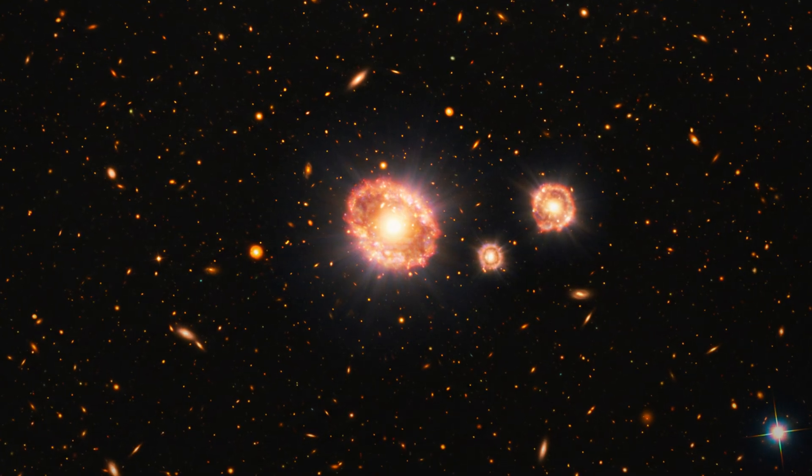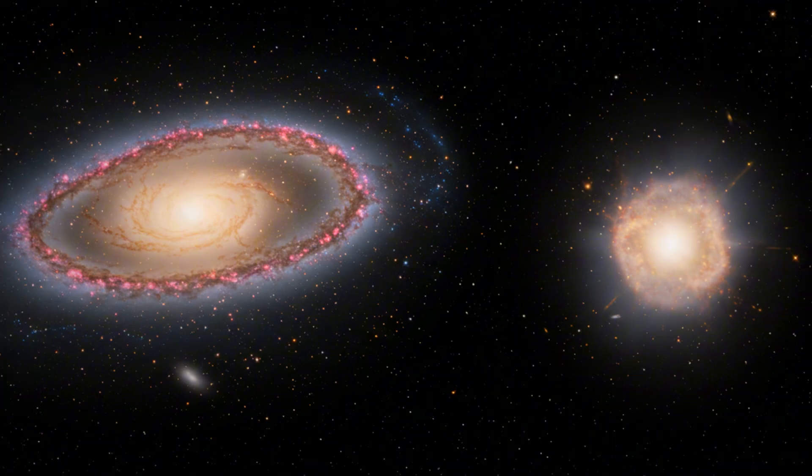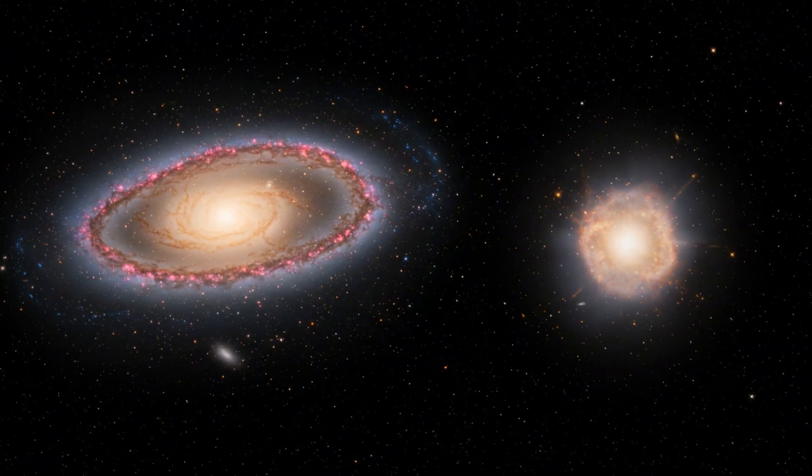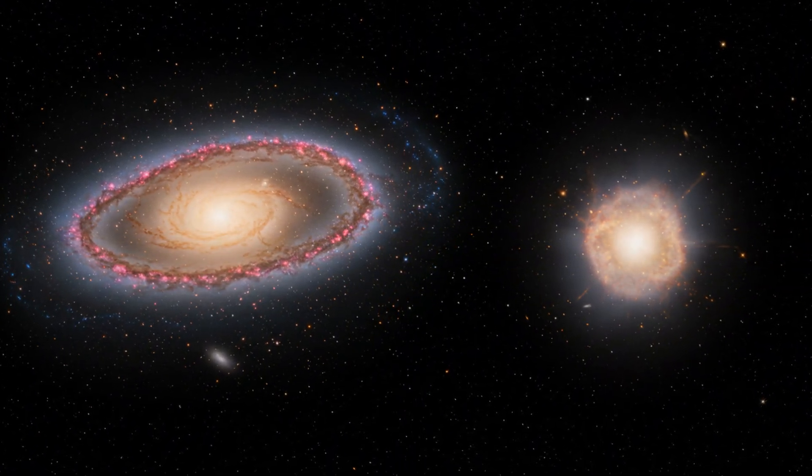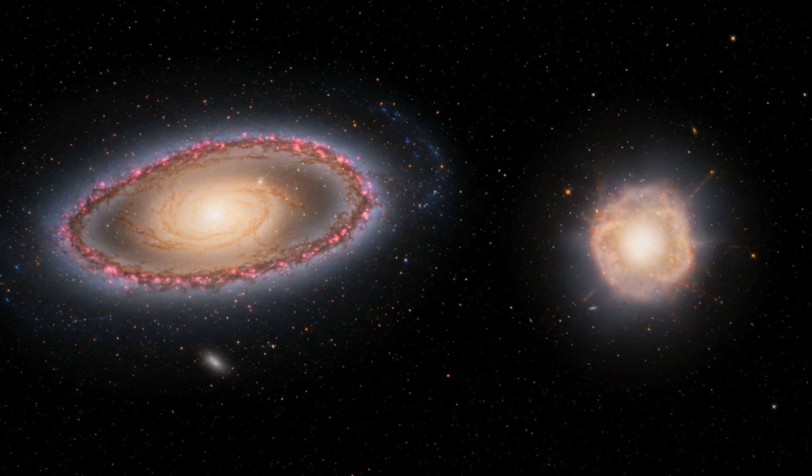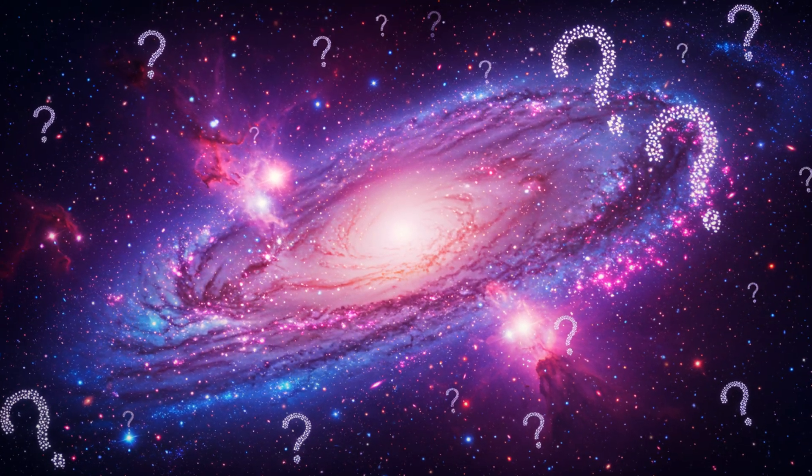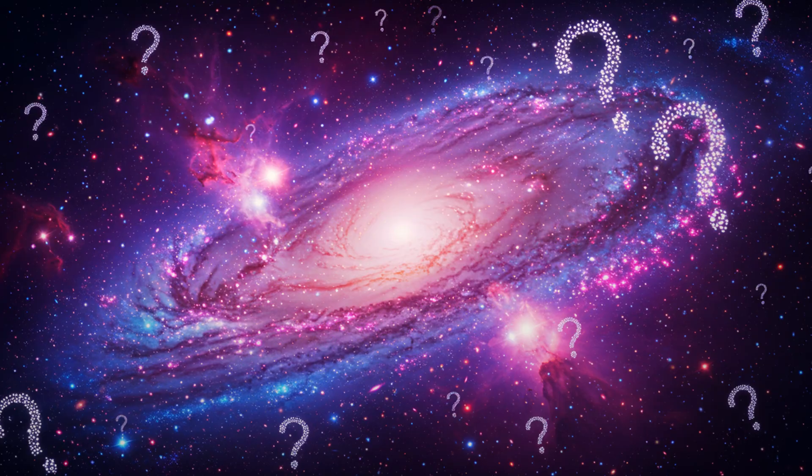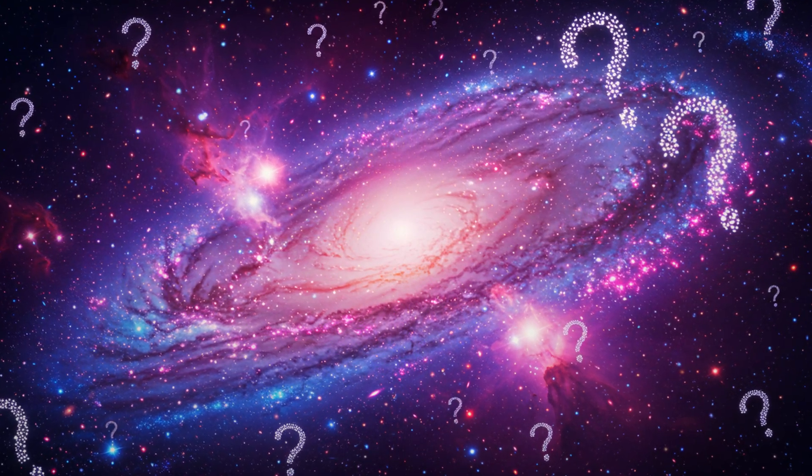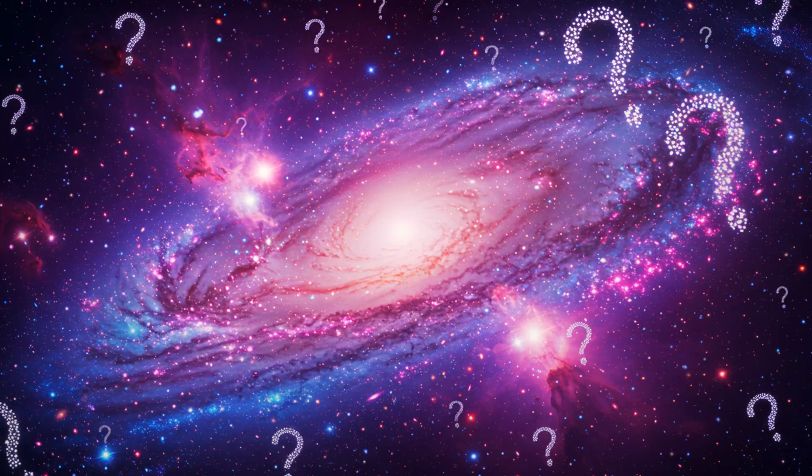What it found was puzzling. Objects shining far brighter than they should have been. Tiny galaxies, only a fraction the size of the Milky Way, glowing with the intensity of giants. According to standard models, there simply wasn't enough time for so many massive stars to exist so early. So where was all that extra light coming from?